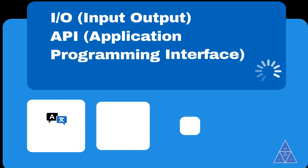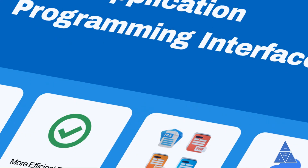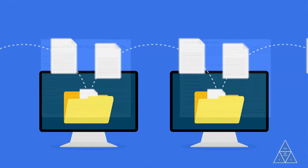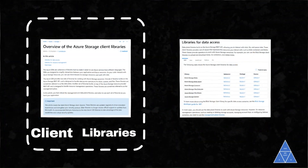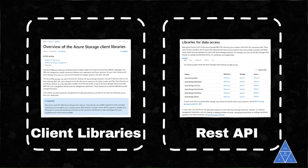Familiar Programmability: Applications running in Azure can access data in the share via file system input-output APIs. Developers can therefore use their existing code and skills to migrate existing applications. In addition to system IO APIs, you can use Azure Storage Client Libraries or the Azure Storage REST API.